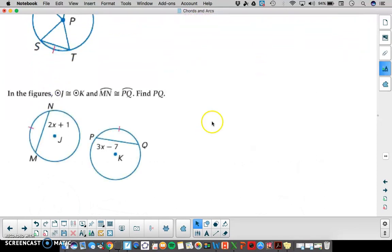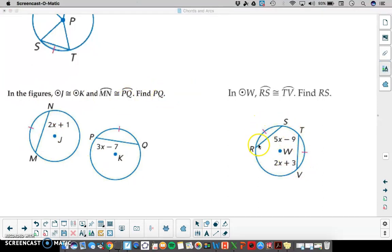Consider these two examples down here. In this example, we have two congruent circles. I want you to find the measure of PQ. In circle W over here, arc RS is congruent to arc TV. Notice that arc symbol and that notation here. And I want you to find the length of segment RS.